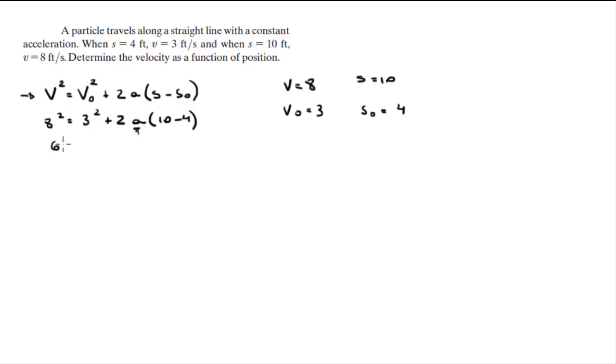So you get that 64 is equal to 9 plus 2a times 6. And eventually you're going to get that a is equal to 4.583, and this is in feet per second squared.